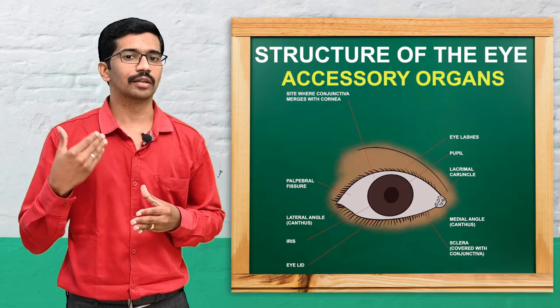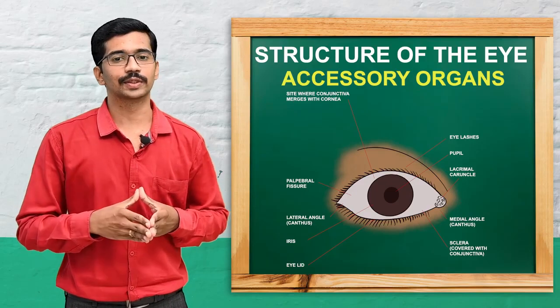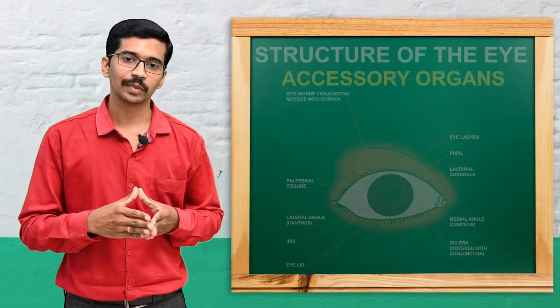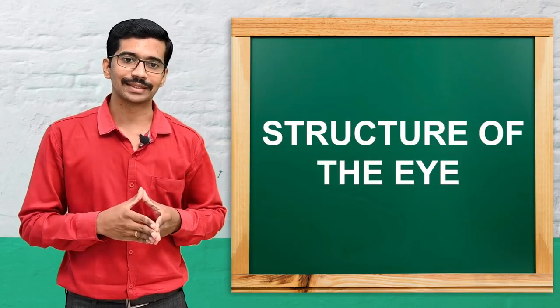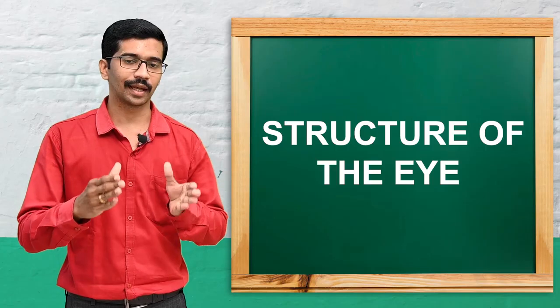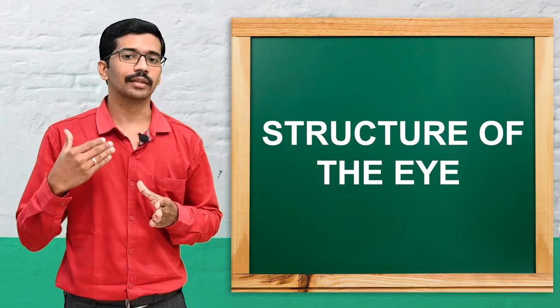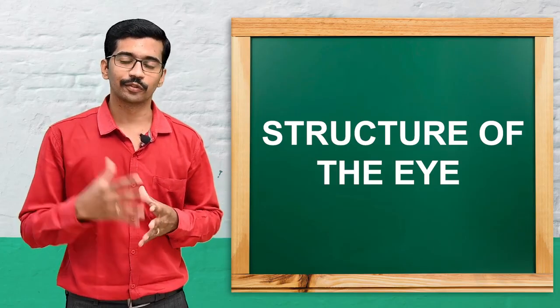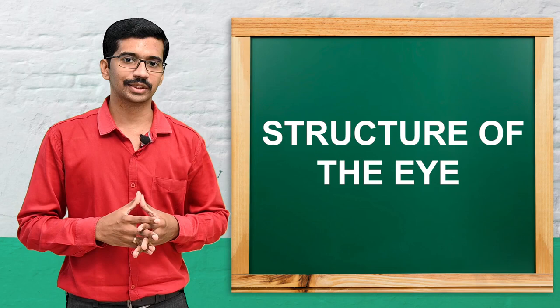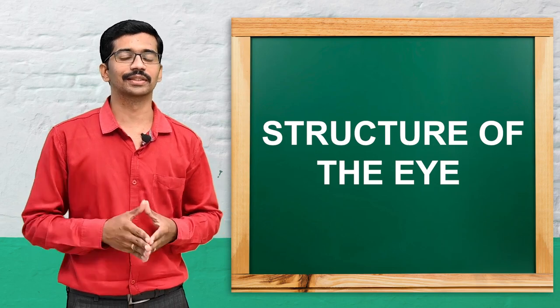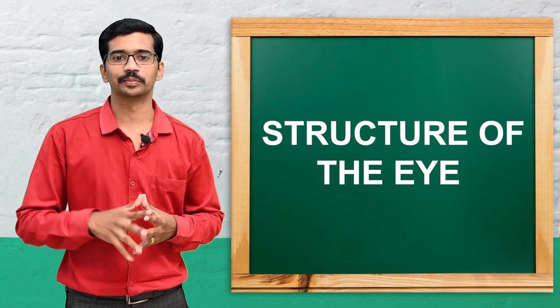These are the various gross structures and gross anatomy of the eye. Today we have seen what the eye is and what the gross anatomy of the eye includes. This is Vishan signing off — till we meet in the next class. Thank you.